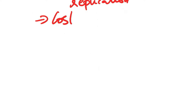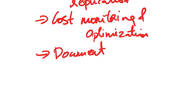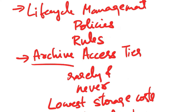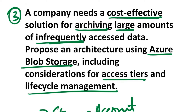Consider implementing additional backups and replication strategies for critical archive data to protect against accidental deletion or data corruption. Regularly review storage costs and usage patterns to optimize storage configurations and adjust access tiers based on changing requirements. Document the storage architecture, access tier policies, and any other relevant configurations. By implementing this architecture, you can create a cost-effective solution for archiving large amounts of infrequently accessed data in Azure Blob Storage while maintaining flexibility, security, and compliance with your organization's requirements.